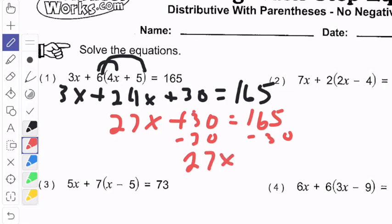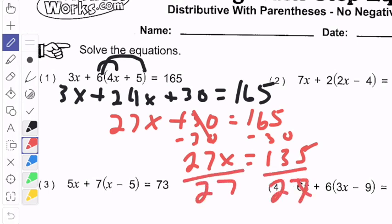And when I do that, I get 27x because these cancel out, equals 135. 27x, we can divide it by 27. And when you do that, x will equal 5.